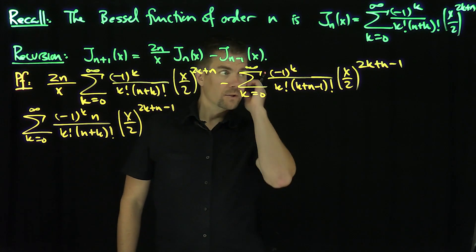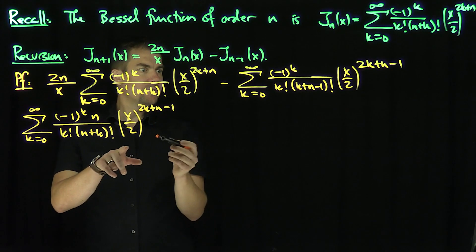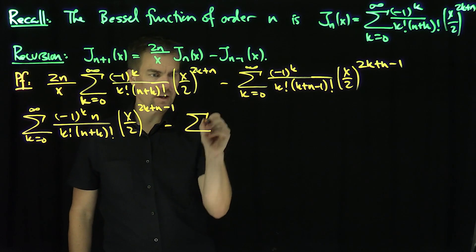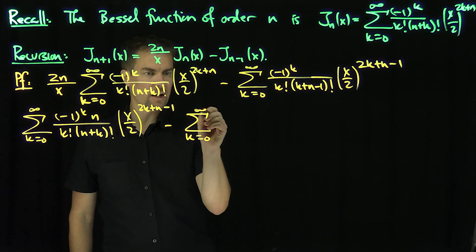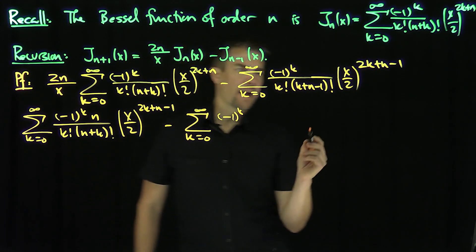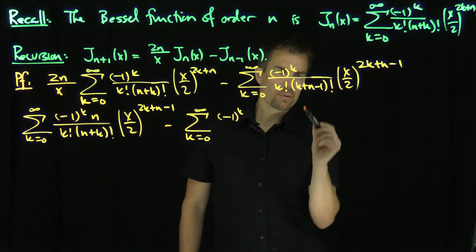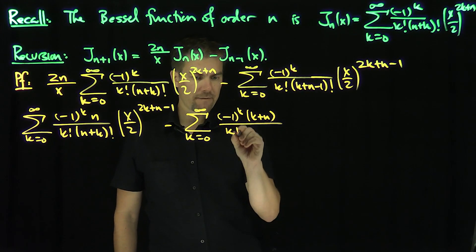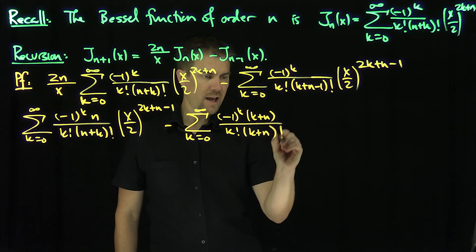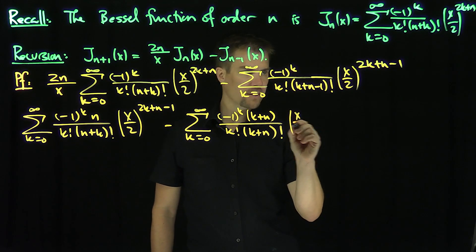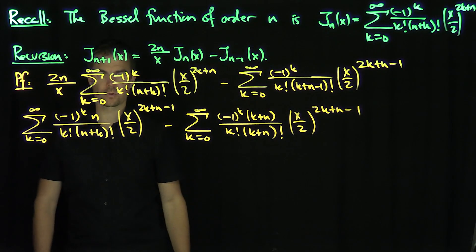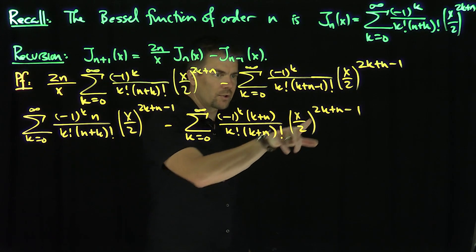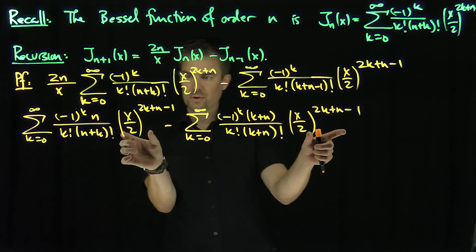Look at this sum. Now these terms are coinciding. I'm going to modify the second sum: k from 0 to infinity of (-1)^k, and now I'm going to put a (k+n) in the numerator, over k! (n+k)!, times (x/2)^(2k+n-1). Now these things have x over 2 to the same exponent, 2k+n-1, so both exponents are the same.